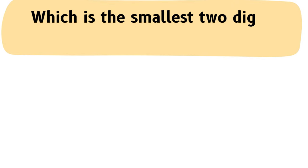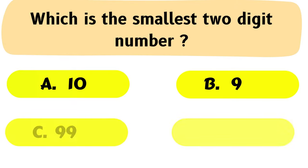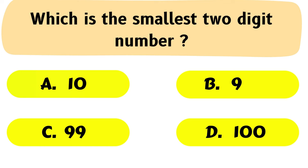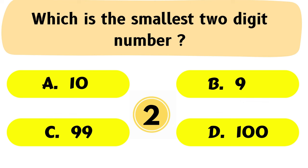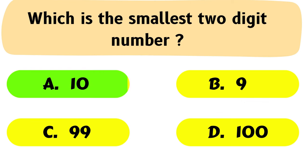Question No. 1: Which is the smallest two-digit number? A. 10, B. 9, C. 99, D. 100. The correct answer is Option A: 10.